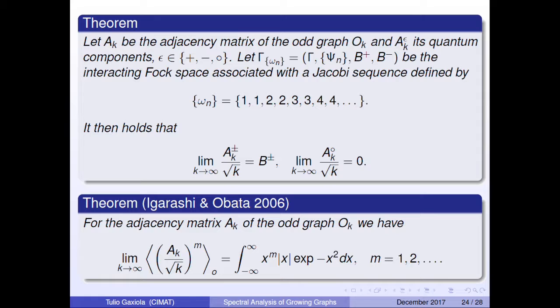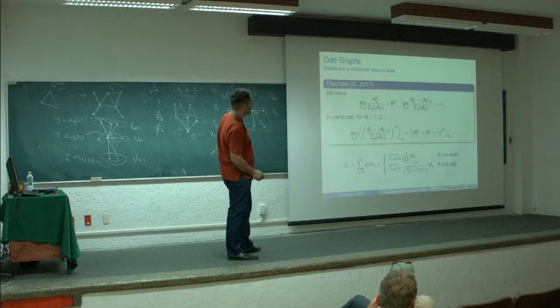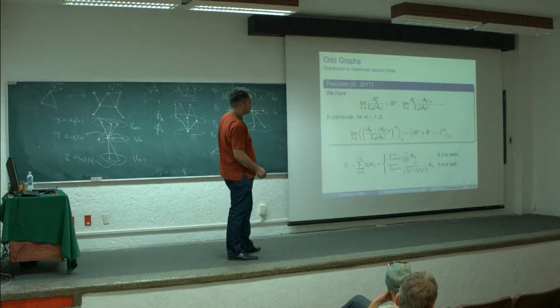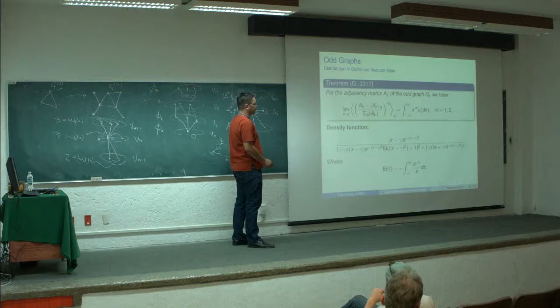The diagonal operator equals 0, and the distribution with respect to the vacuum state is given by the two-sided Rayleigh distribution. Now, what happens if we use the deformed vacuum state? We use the same creation and annihilation operators but with a different diagonal operator. The result is not with respect to the vacuum state but with respect to a new coherent state defined by a specific equation.